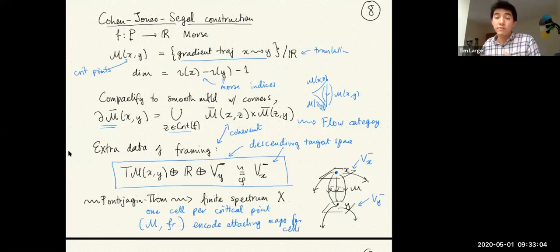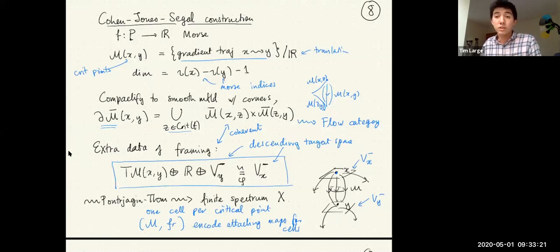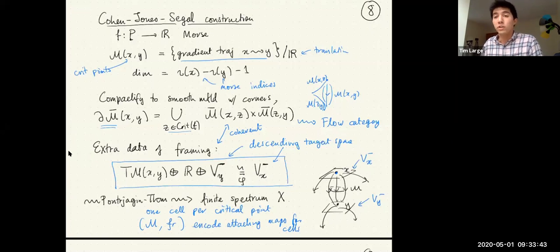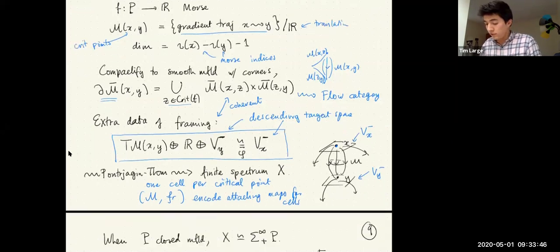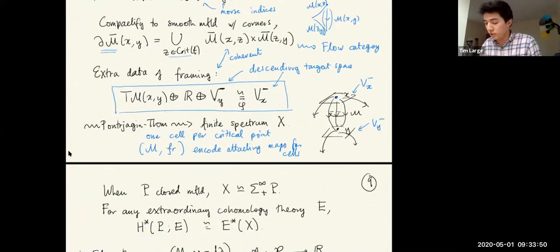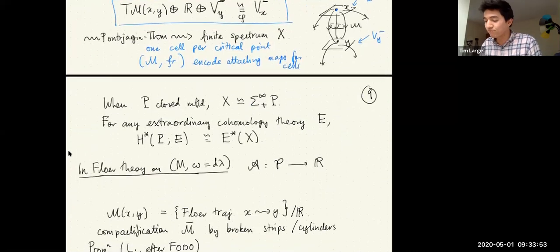Cohen-Jones-Segal described a way to generalize the Pontryagin-Thom construction to produce from this a finite spectrum X, with one cell per critical point. The moduli spaces M together with their framings and the flow category structure encode the attaching maps for the cells. The framings on zero-dimensional moduli spaces are basically a choice of whether to count a trajectory as +1 or -1 in the Morse differential, describing the degree of the attaching map. This construction goes back to the work of John Franks in the 1950s, going back really to the beginnings of Morse theory and stable homotopy theory.